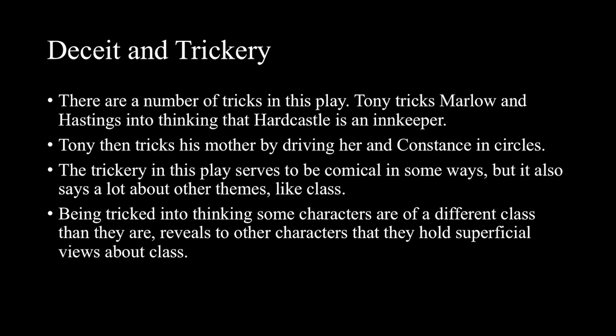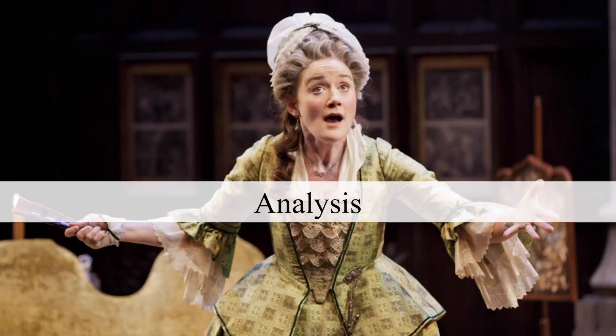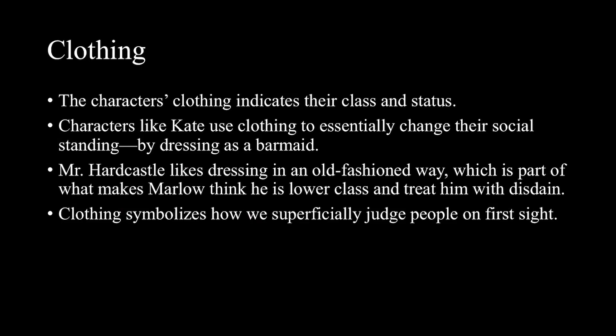Deceit and trickery are another important set of themes, with a number of tricks throughout the play. Tony tricks Marlow and Hastings into thinking that Hardcastle is an innkeeper, and then tricks his mother by driving her and Constance in circles. The trickery is comical but also reveals a lot about class — being tricked into thinking characters are a different class reveals just how superficial other characters really are when it comes to class.